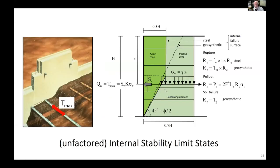Taking a deeper look at internal stability limit states, on the load side there's an equation or model to calculate the maximum tensile load in a reinforcing element under operational conditions. There are several simple analytical equations available depending on whether it's a steel or polymeric reinforced soil wall. On the resistance side, nominal resistances describe the capacity of the elements to resist load, to resist pullout, and in some cases to prevent actual failure of the soil.